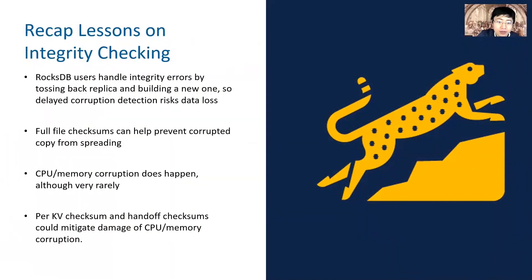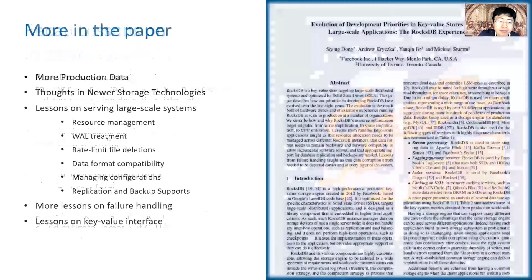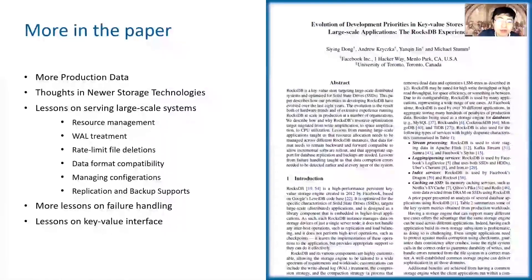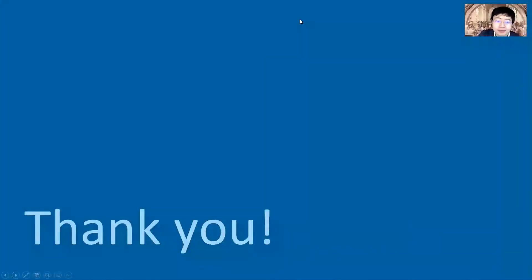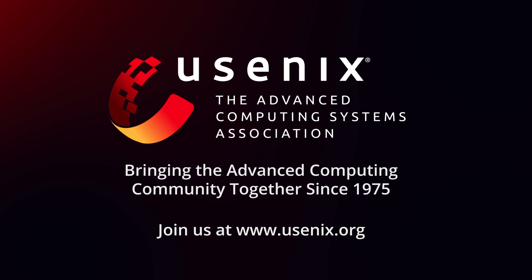To recap the lessons on integrity checking: detecting RocksDB corruption earlier can help prevent permanent data loss, and full file checksum can help. To mitigate the trouble of CPU bit flips, key-value checksum and handoff checksum can help. We introduce many more lessons in our paper — if you are interested, please go ahead and read it. Thank you, and I will be happy to take your questions.